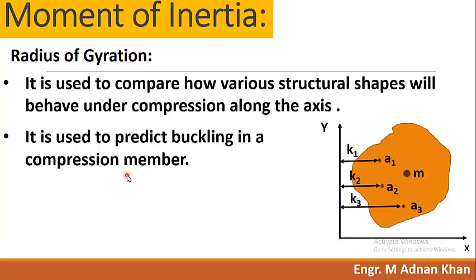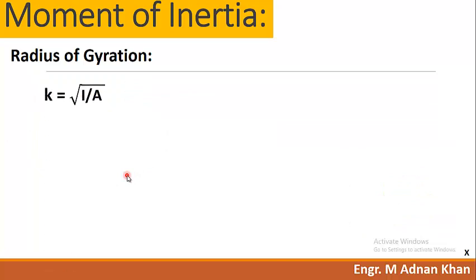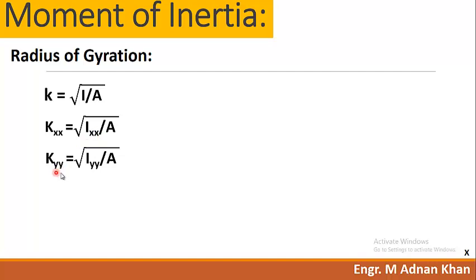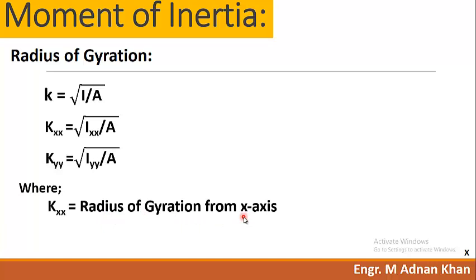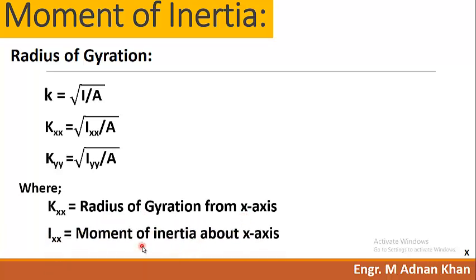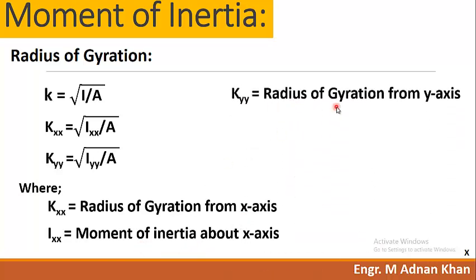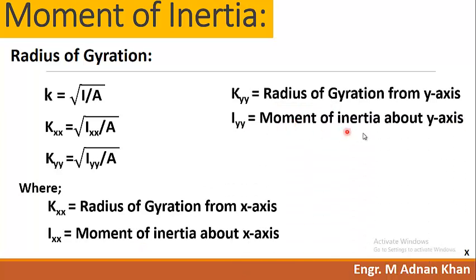The notations used in the formula are: k_xx = √(I_xx / A) and k_yy = √(I_yy / A). Here, k_xx is the radius of gyration from the x-axis, I_xx is the moment of inertia about the x-axis, k_yy is the radius of gyration from the y-axis, I_yy is the moment of inertia about the y-axis, and A is the area of the figure.